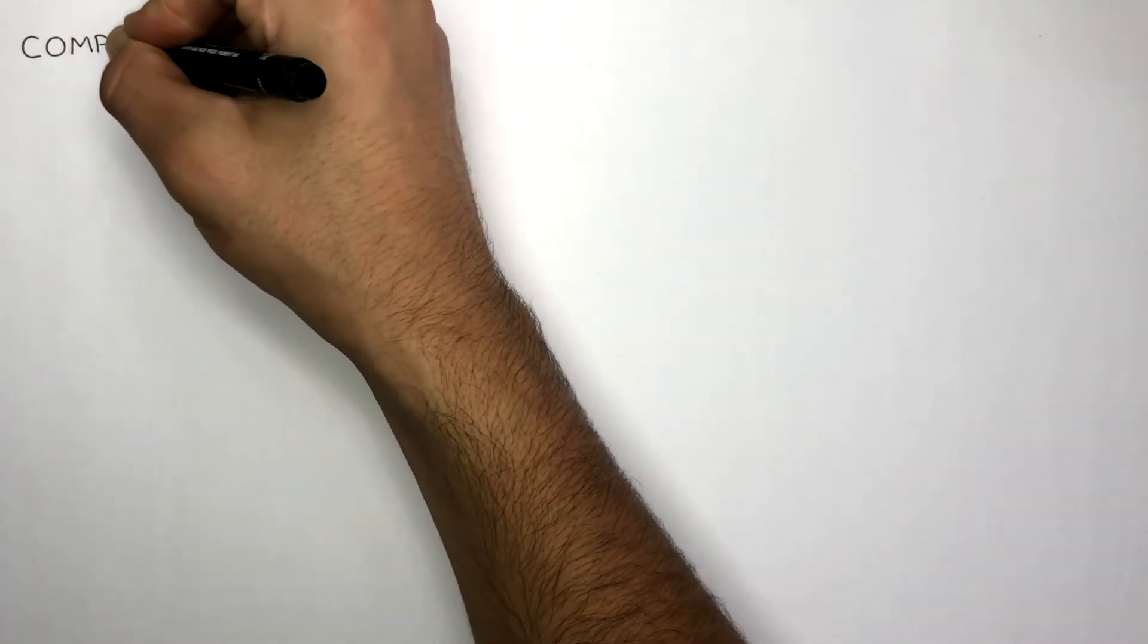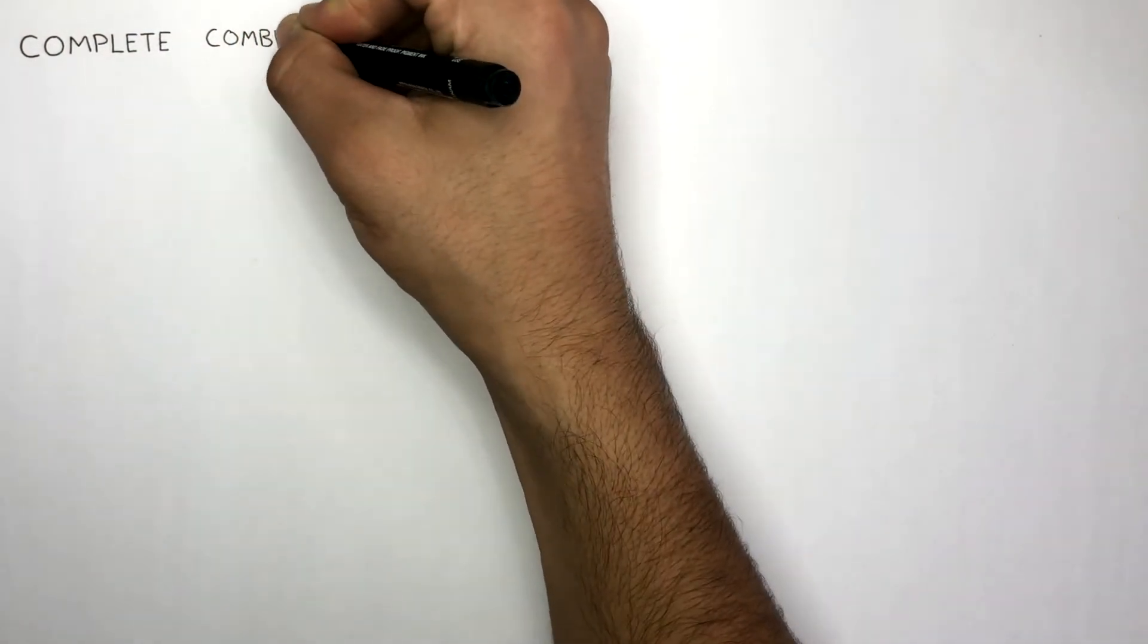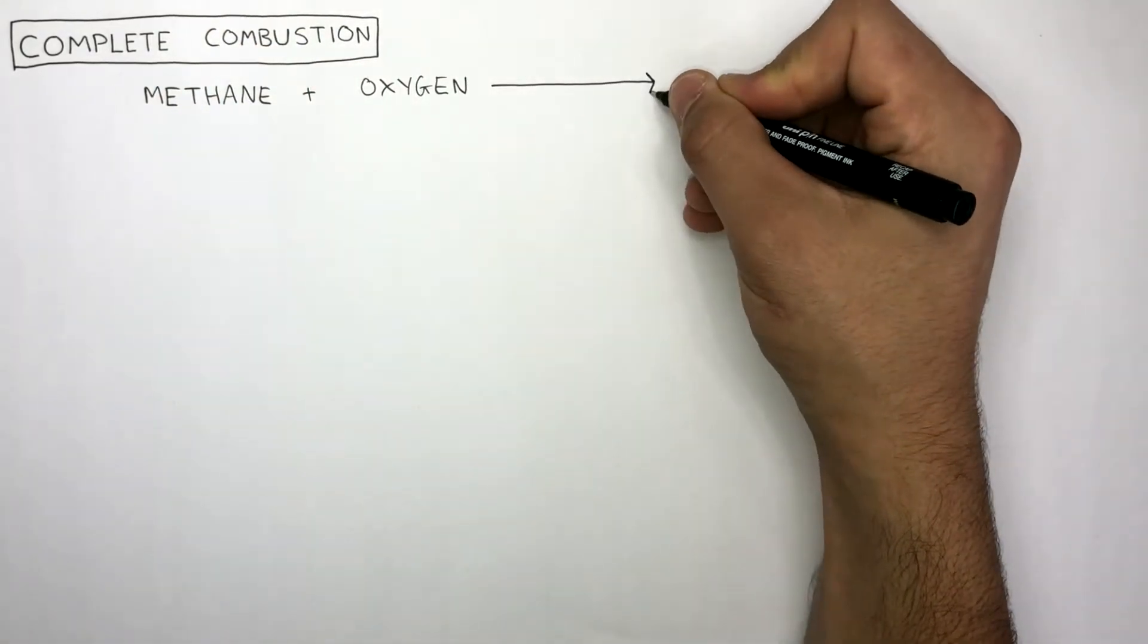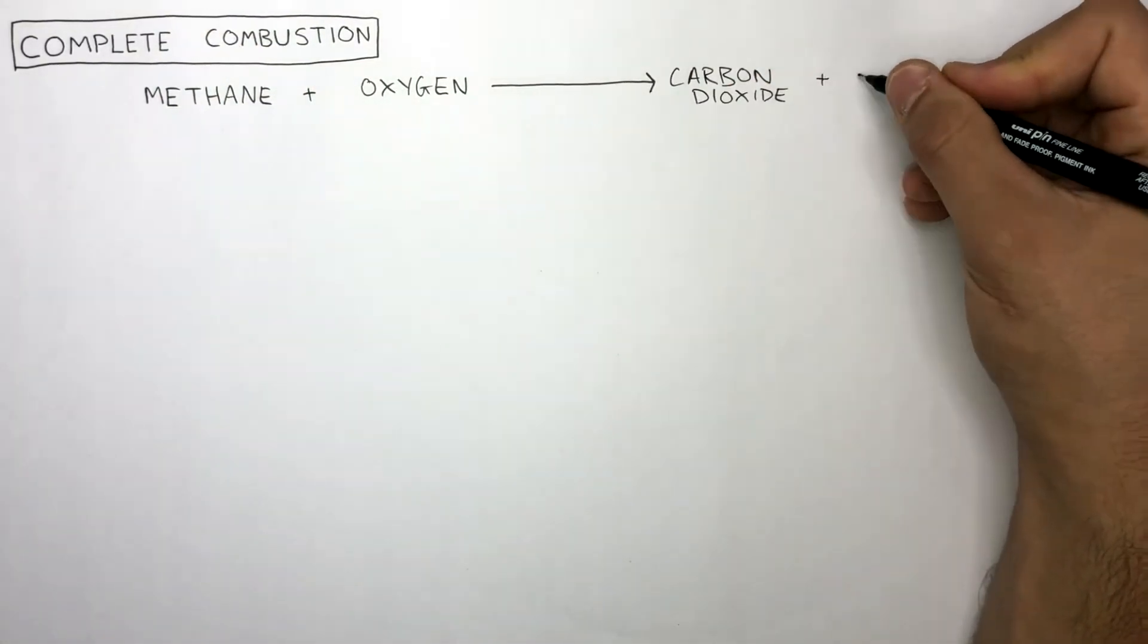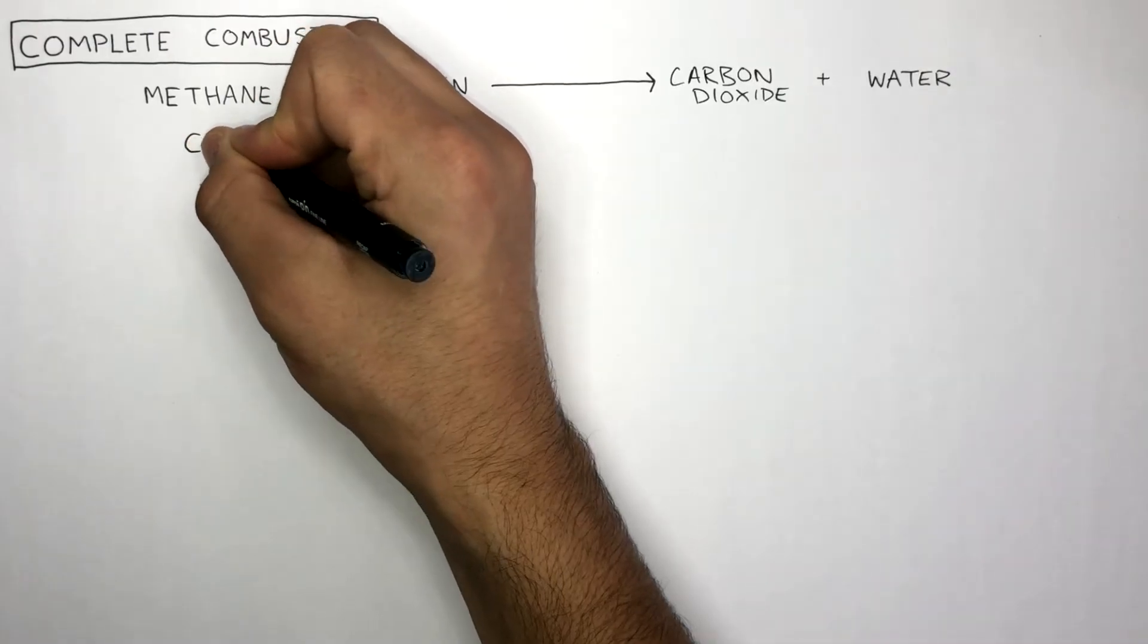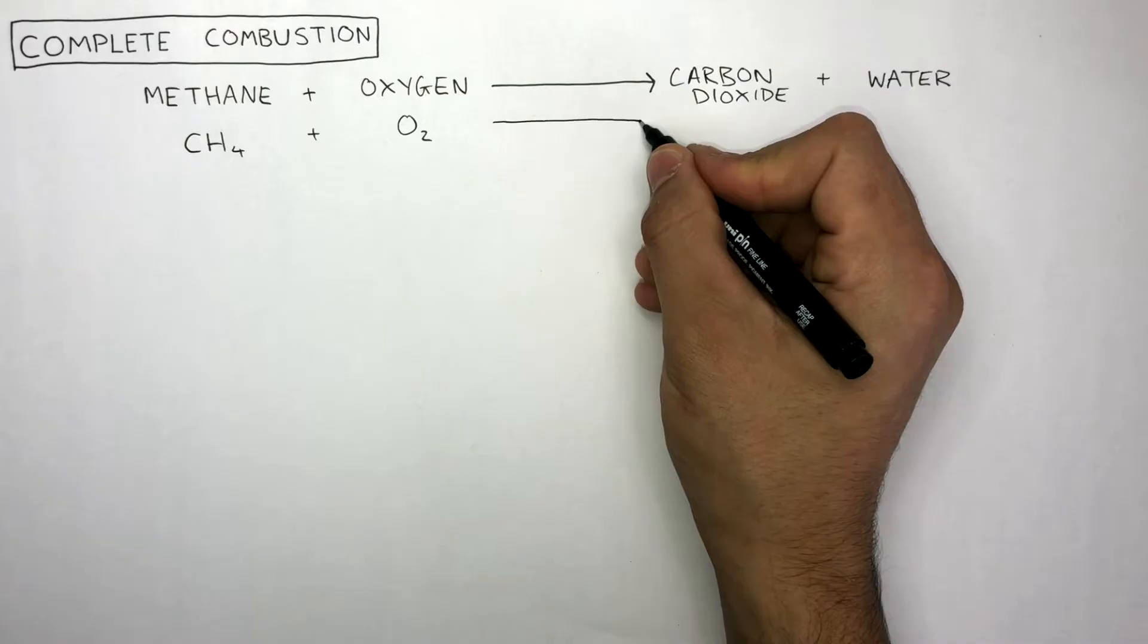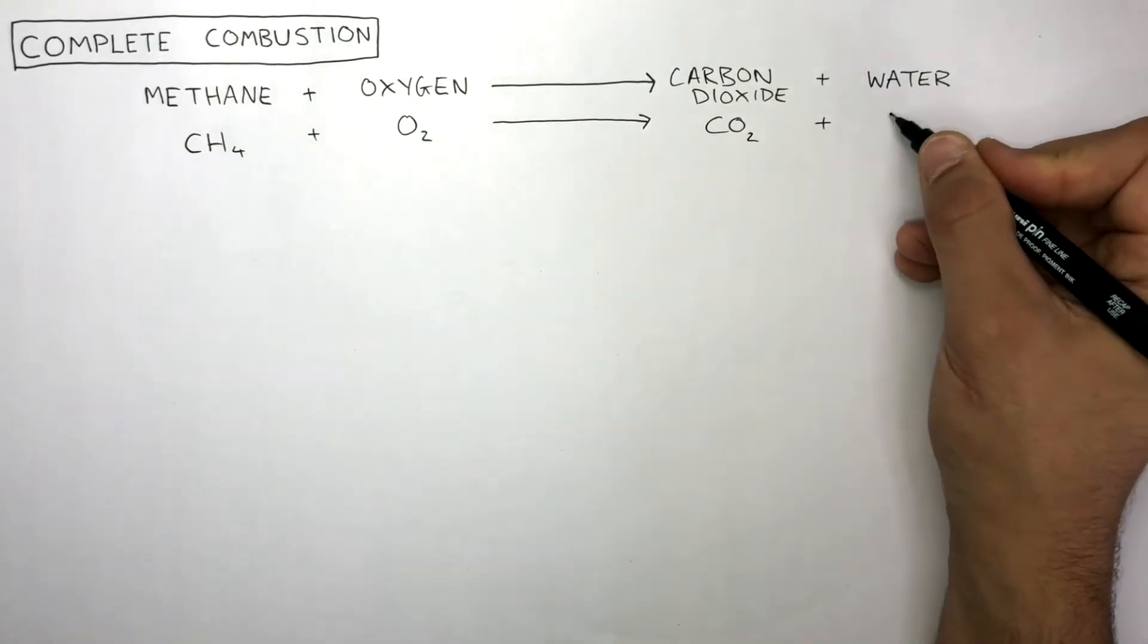Complete combustion is combustion in a plentiful supply of oxygen. Let's look at how methane reacts with oxygen to produce carbon dioxide and water. The balanced equation is CH4 plus 2O2 goes to CO2 plus 2H2O.